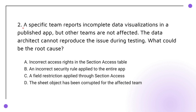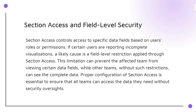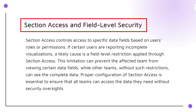Question 2: A specific team reports incomplete data visualizations in a published app, but other teams are not affected. The data architect cannot reproduce the issue during testing. What could be the root cause? The knowledge points of this question are Section Access and Field Level Security.